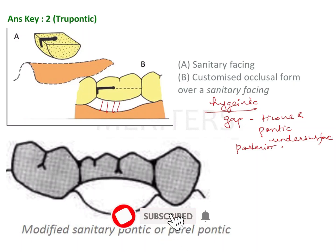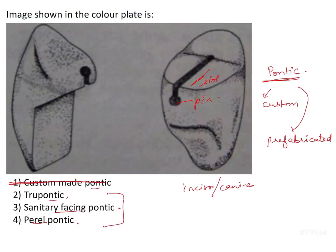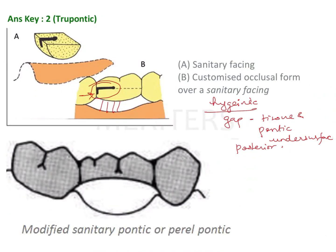The design of a sanitary facing pontic is a two-piece pontic, and although a pin is present in the question image, this pontic is for an anterior tooth. We cannot have that kind of gap for an anterior tooth, so sanitary facing pontic is eliminated from the options.